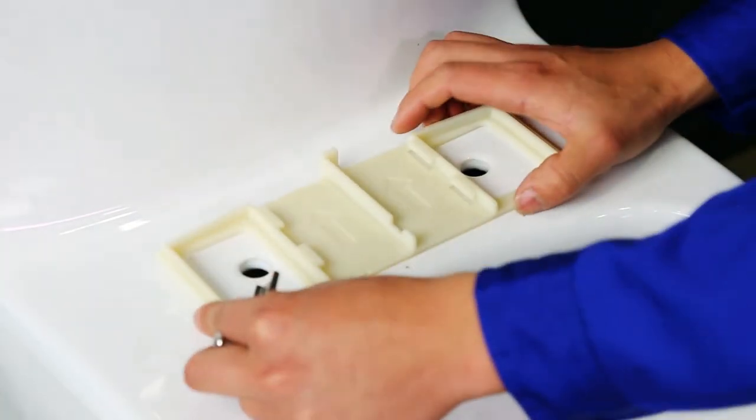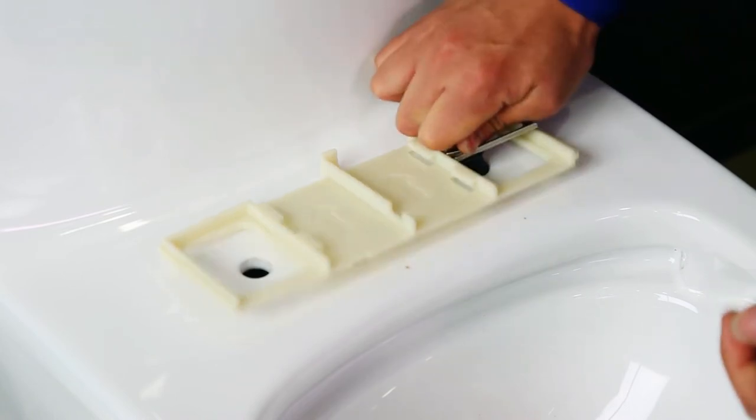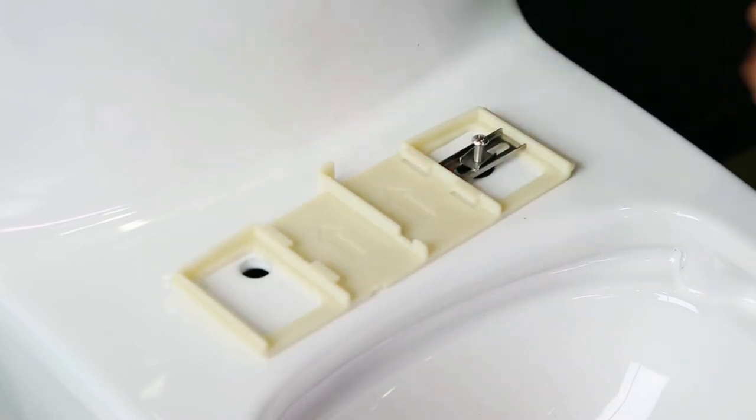First, place the mounting bracket on the toilet and put expansion screws into two holes. Adjust to right position. Then secure the bracket by fastening the nuts.